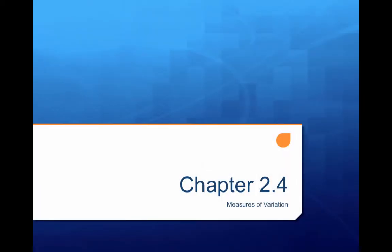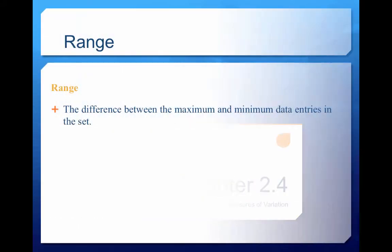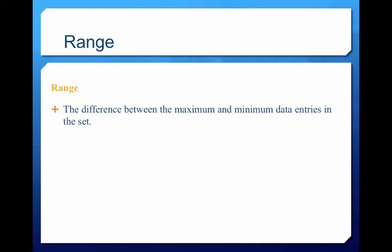Let's start talking about chapter 2.4, which is measures of variation. Last week we talked about central tendency — the mean, the median, and the mode. This week we're going to talk about the range, deviations, variance, and standard deviations.